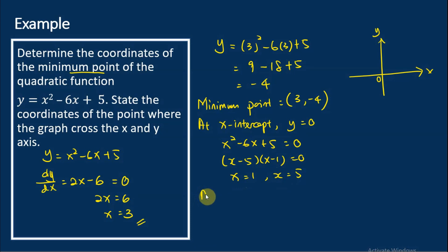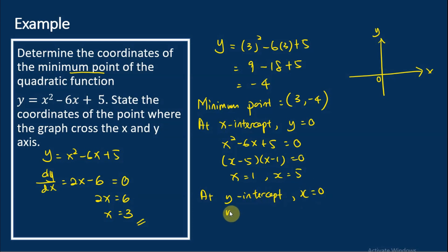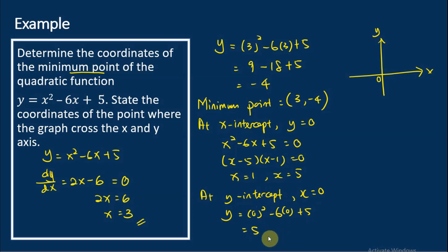And for the y-intercept, x = 0. Therefore, y = 0² - 6(0) + 5 = 5. So these are the x-intercepts at x = 1 and x = 5, and the y-intercept at y = 5 for this quadratic function.